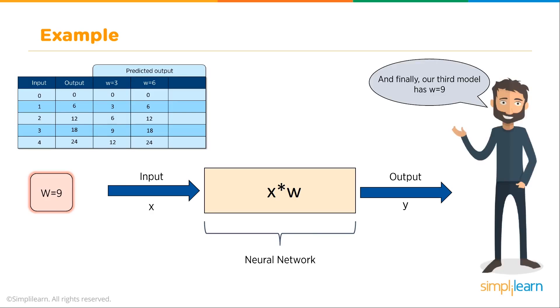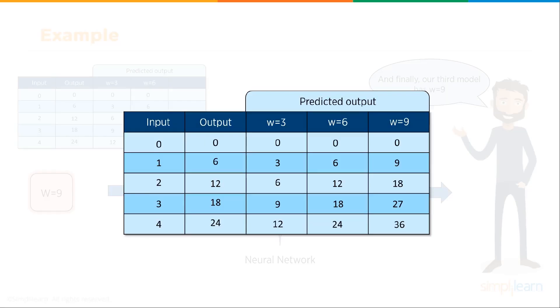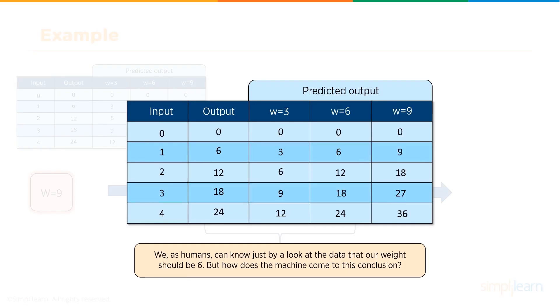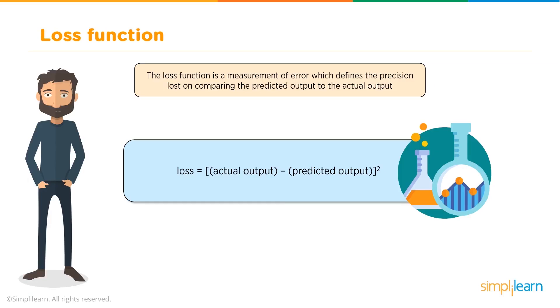We'll go ahead and put in a third model where w equals 9. This is one way of doing this, just to guess what w equals. You can see with w equals 9 we get the incorrect answers: 9, 18, 27, 36. We as humans can know just by taking a look at the data that our weight should be 6. But how does the machine come to this conclusion? We're going to have a loss function. The loss function is a measure of error which defines the precision lost by comparing the predicted output to the actual output. It's simply loss equals actual output minus predicted output, and then we square the whole thing.